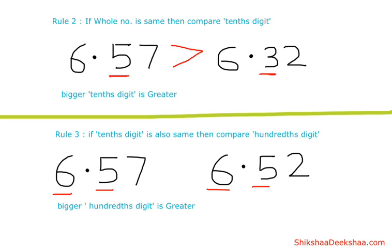Here we have 7 and here we have 2. Since 7 is greater than 2, 6.57 is greater than 6.52.